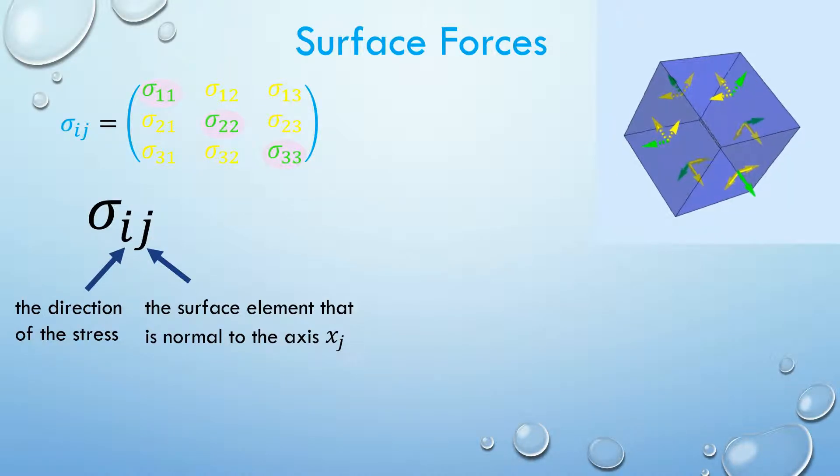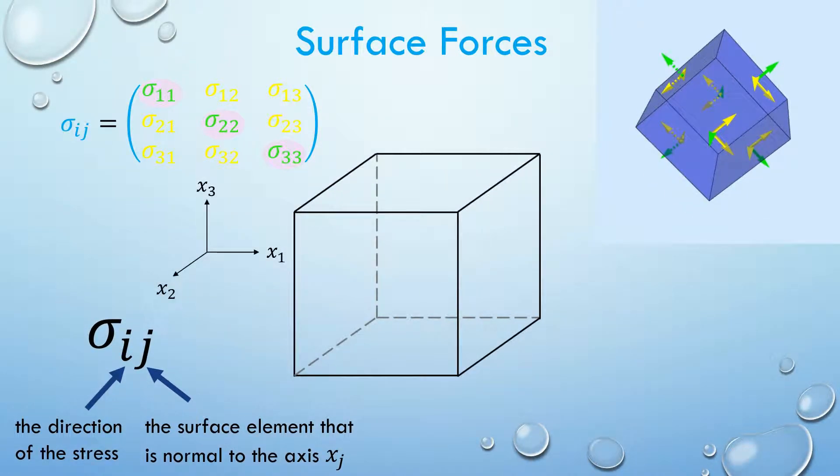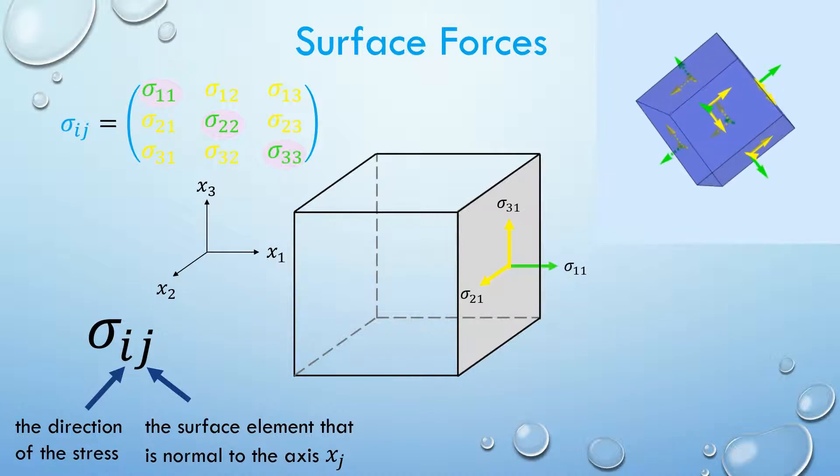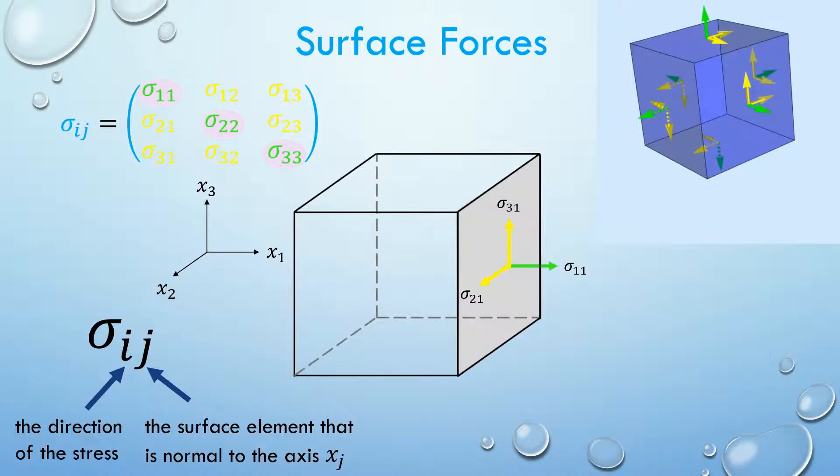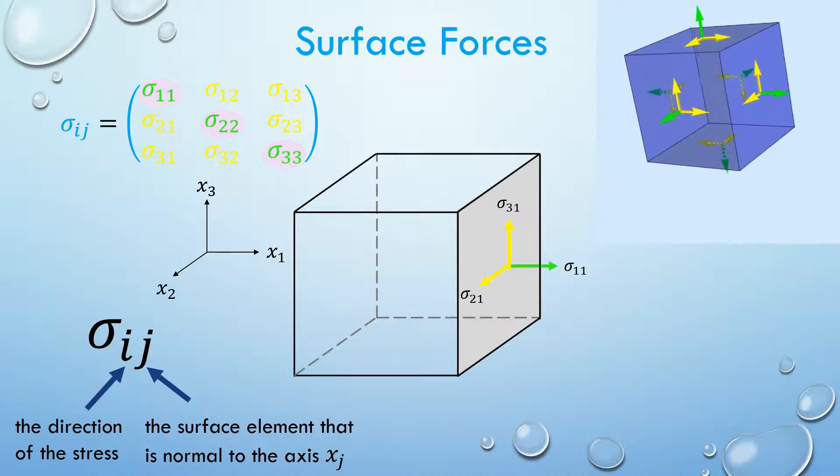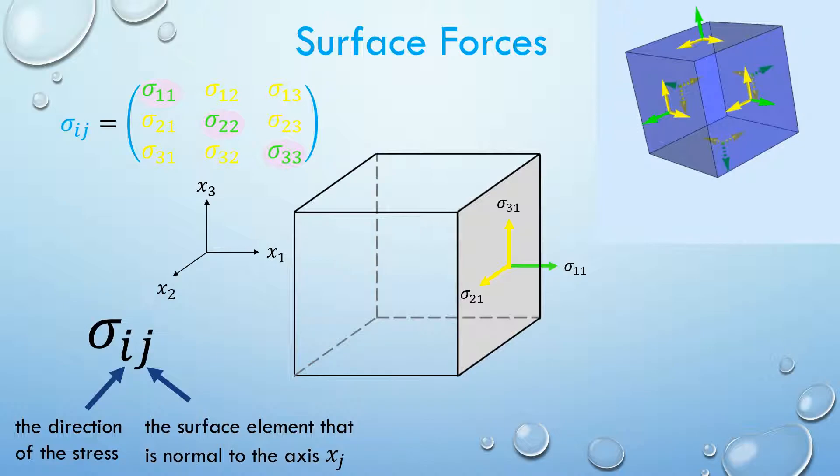Sigma 11, sigma 22 and sigma 33 are the normal stresses and the rest are the shear stresses. Here is an example. Take a look at the right side of the cube. The normal stress is sigma 11, sigma 21 and sigma 31 are shear stresses. Remember the first little number shows the direction of the stress and the last small number shows the surface element that is perpendicular to the axis. In this case, to the axis x1. The stresses on the other faces are as shown.